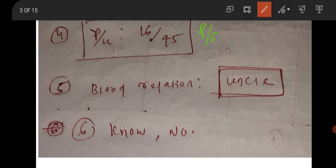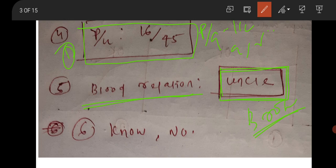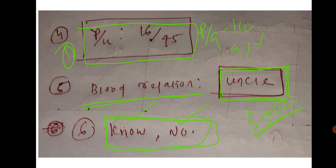Next question: P/Q is 1/2, Q/R is 3/4, and U is 50% more than P. What will be the ratio P/U? The correct answer will be 16/45, which I think was option D. Then a blood relation question was there — the final answer may be 'uncle.' Some students are wondering about 'brother,' but uncle will most probably be correct. There was also a 'no and no' answer question.